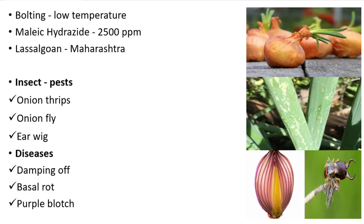Damping off is caused by soil-borne pathogens and occurs at two stages: pre-emergence and post-emergence. During pre-emergence, the seed and seedling rot before they emerge from the soil. In post-emergence, the pathogen attacks the collar region of the plant, causing it to rot and leading to the death of the plant.